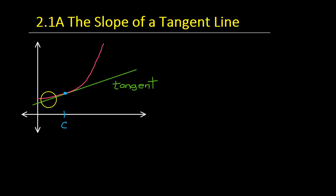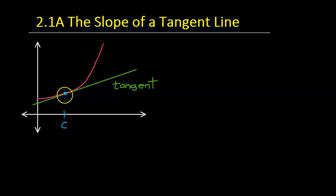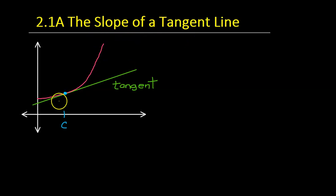Informally, we think of a tangent line as a line that just barely touches the curve at a single point. There's actually a lot more to it than that, but that's a good place to start. The question is: how do we find the slope of a tangent line at C?